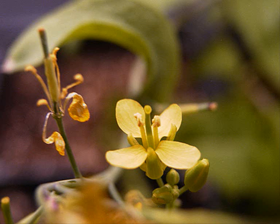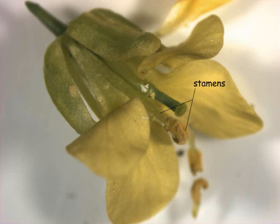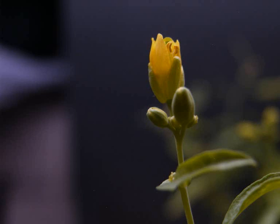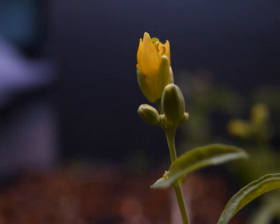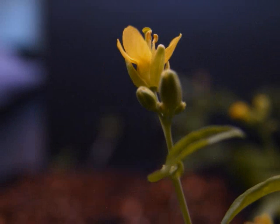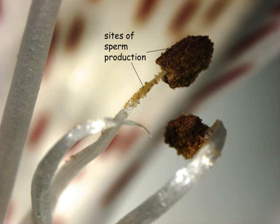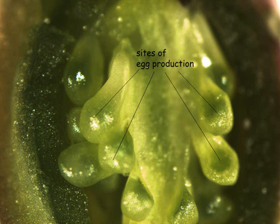Four whorls make up a flower. These are the sepals, petals, stamens, and carpels. The stamens are the male organs and the carpels are the female organs. When flowers are produced, the plant is about to undergo an alternation of generations. This means that the genetic content is going to change as new cells are formed within the male and female parts of the flower.